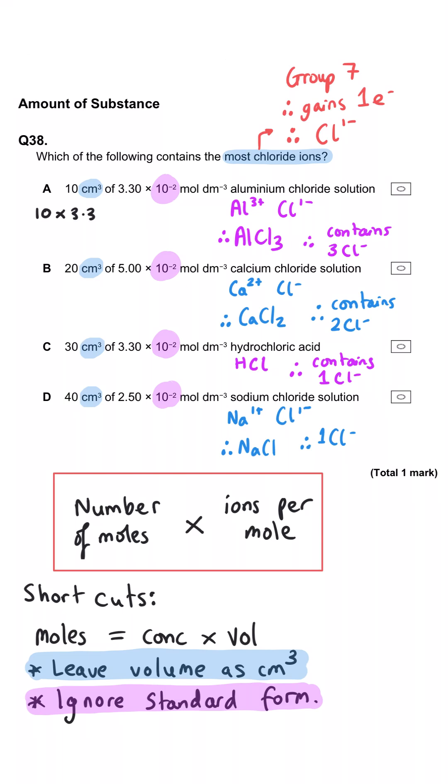And so for A, we need to do 10 multiplied by 3.3 multiplied by 3 for the number of chloride ions per formula. That gets us 99. For B, we do 20 multiplied by 5 multiplied by 2, which gets us 200. 30 times by 3.3 multiplied by 1 is 99. 40 times by 2.5 multiplied by 1 is 100. And we can see therefore that B has got the largest number, which means it will have the most chloride ions for that volume.